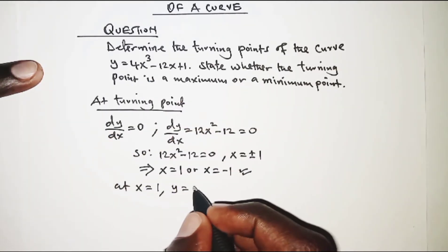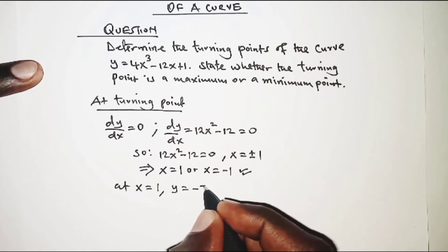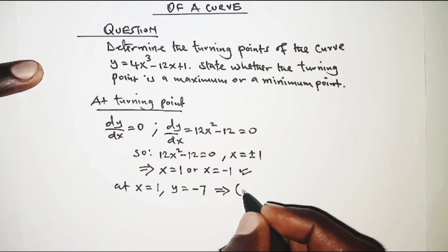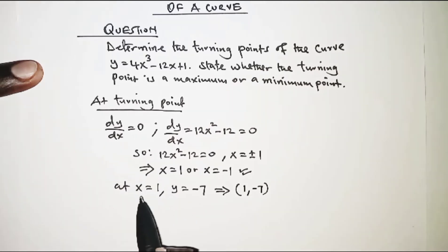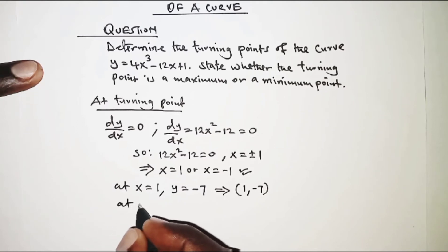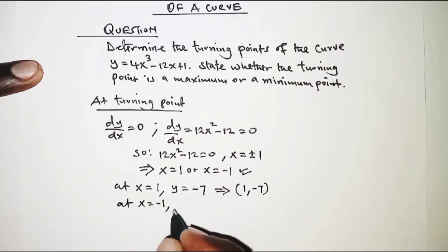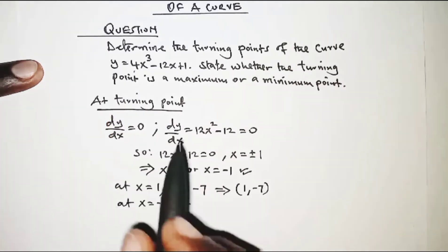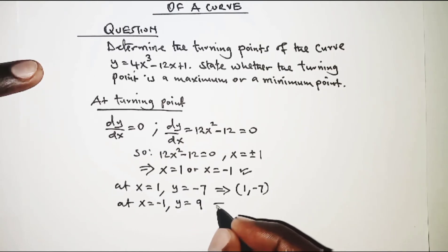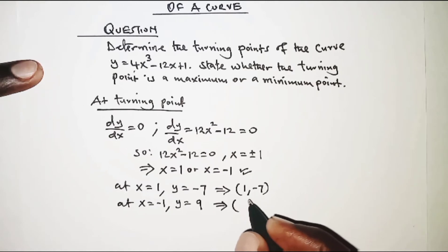Substituting x = 1 gives y = -7, which implies that the turning point is (1, -7) — those are the x and y coordinates. Also, at x = -1, substituting into the equation gives y = 9, so the turning point is (-1, 9).